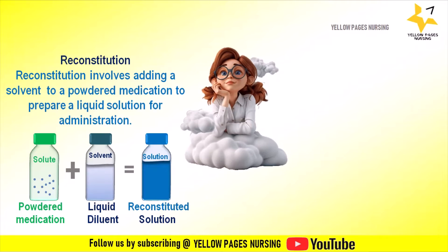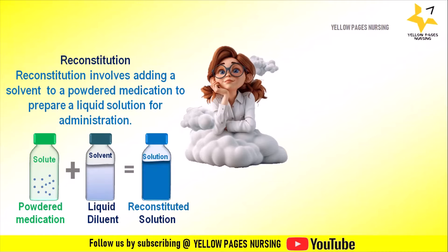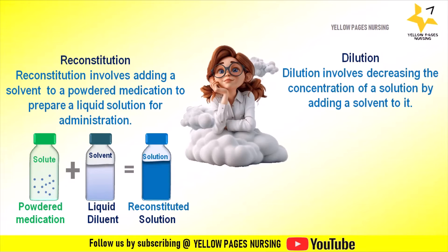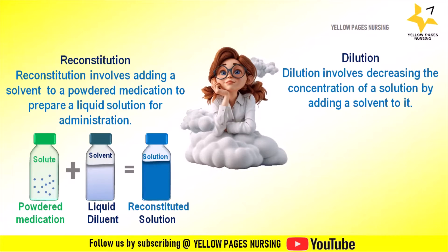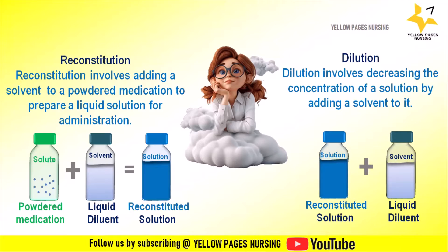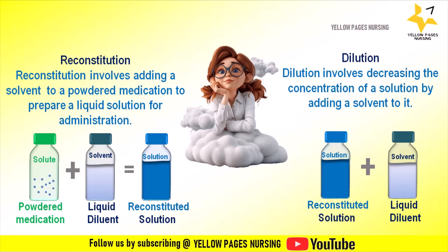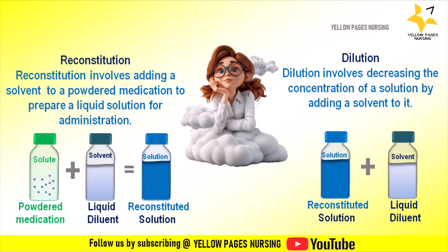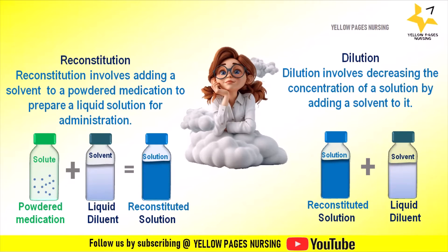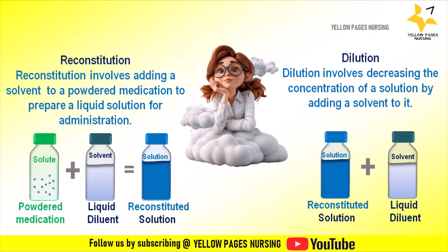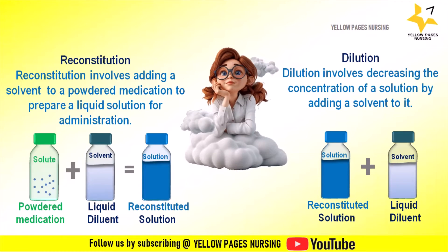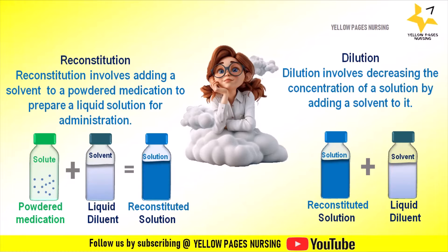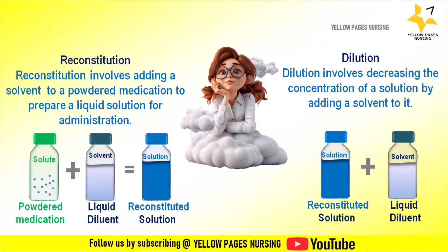This powdered drug must be reconstituted or dissolved with a sterile diluent before administration. Dilution involves decreasing the concentration of a solution by adding a solvent such as saline or sterile water to it. The picture shows a reconstituted solution mixed with a solvent or liquid diluent in order to decrease the concentration of a solution.